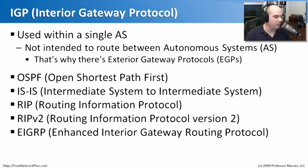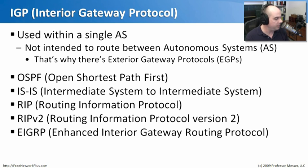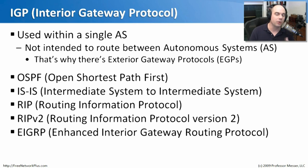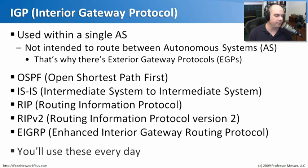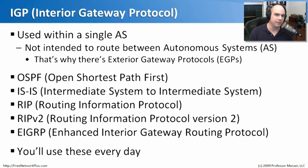For interior gateway protocols, the examples we've already discussed in a previous module include OSPF, ISIS, RIP, RIP version 2, and EIGRP — all very good examples of interior gateway protocols. These are protocols you use inside of your organization to route, and they're what you'll use every day inside of your environment.